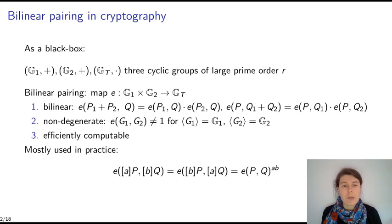In practice, we use the fact that the pairing of A times P and B times Q equals the pairing of B times P and A times Q. So we can swap the scalars. And it also equals the pairing of P and Q to the power AB. So we can multiply the scalars in the exponent thanks to a pairing.